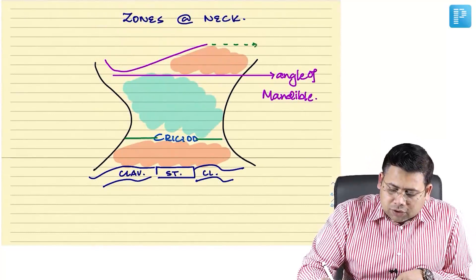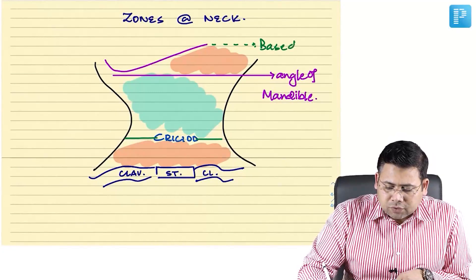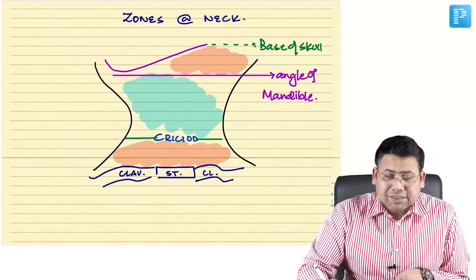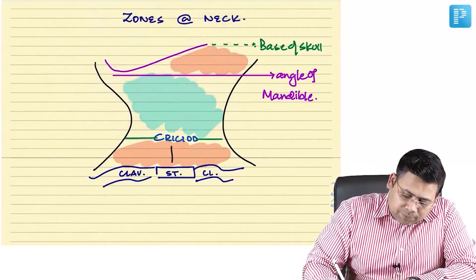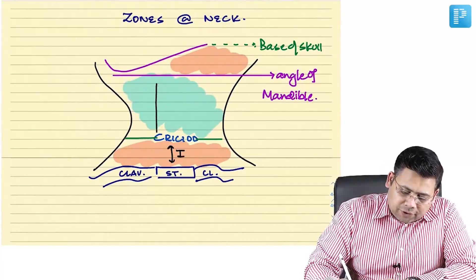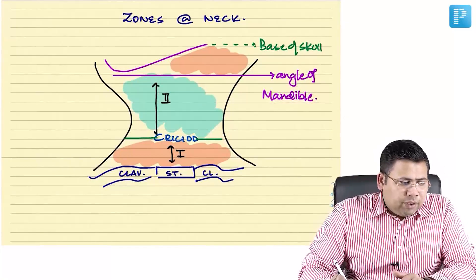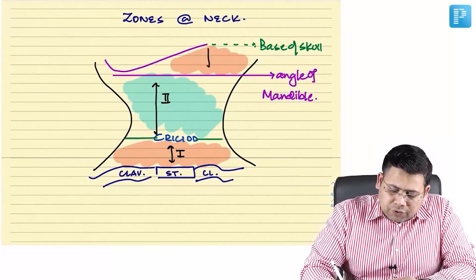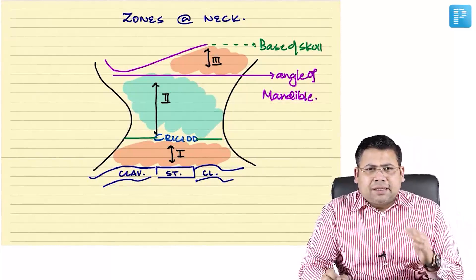Zone 3 extends up to the occiput or base of skull. So to summarize: Zone 1 is from the level of sternum to the cricoid, Zone 2 is from the cricoid to the angle of mandible, and Zone 3 is above the angle of mandible up to the base of skull.